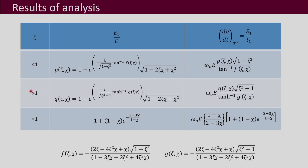For the overdamped condition, zeta greater than 1, E1/E is expressed as function q, which is similar to the underdamped case — tan is replaced by tanh and function f is replaced by function g. Functions f and g are essentially the same, except f uses (1 minus zeta squared) while g uses (zeta squared minus 1). Similarly, the average dv/dt expression is analogous, with tanh instead of tan and g replacing f.